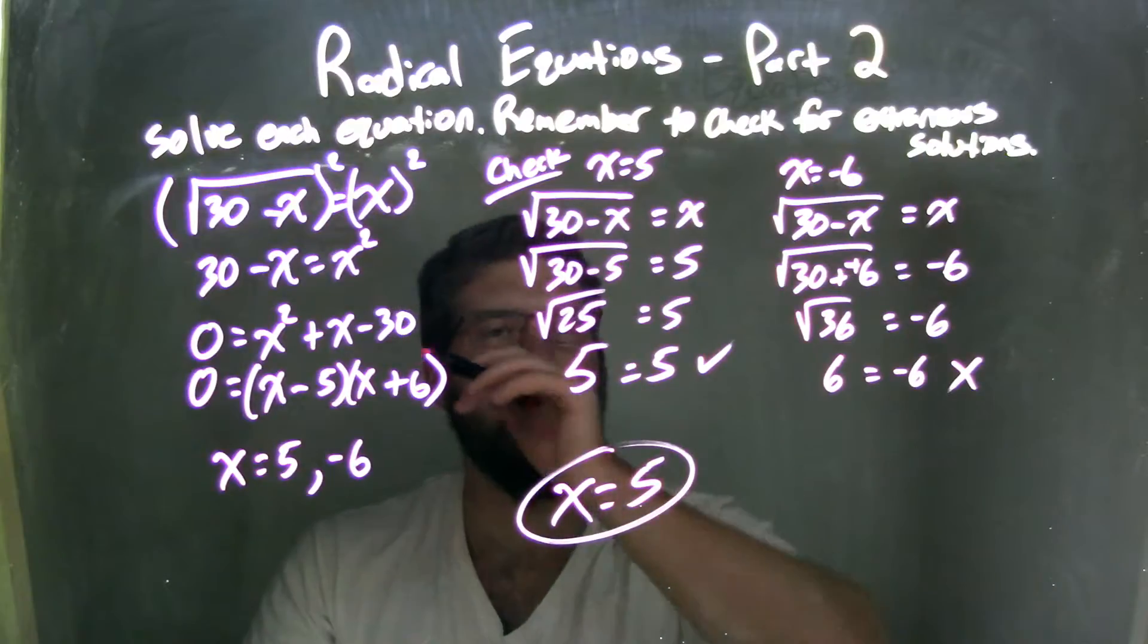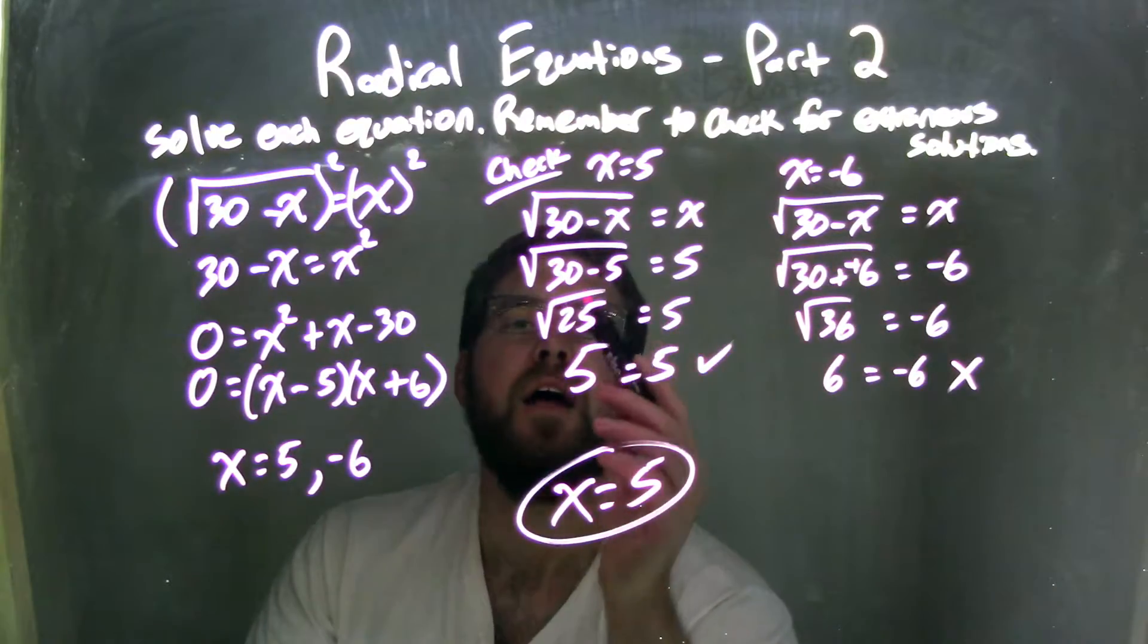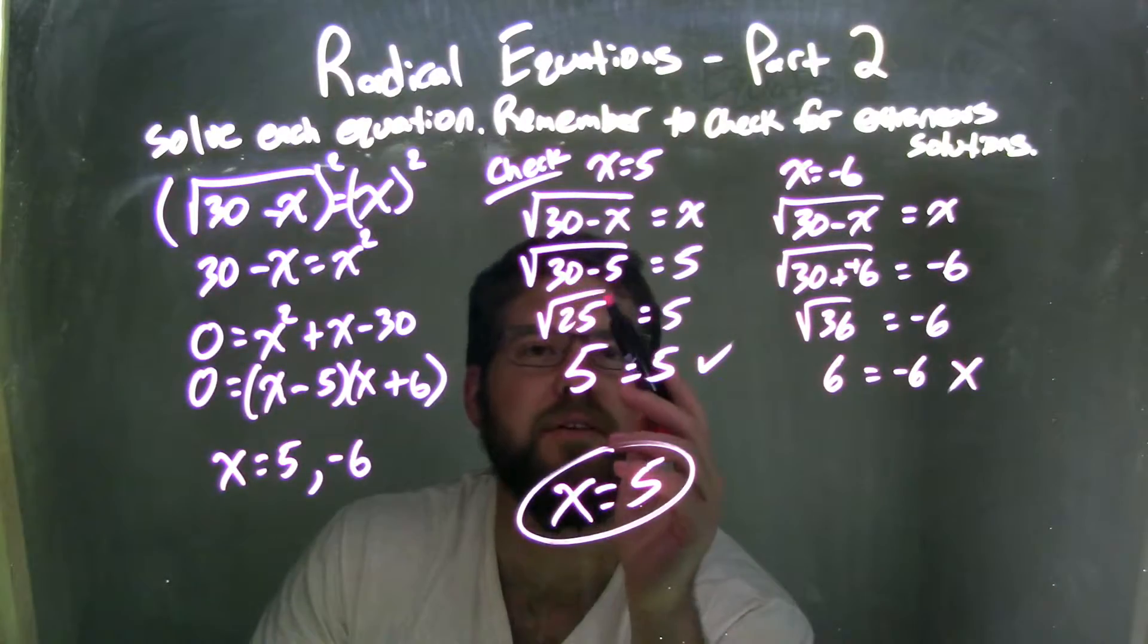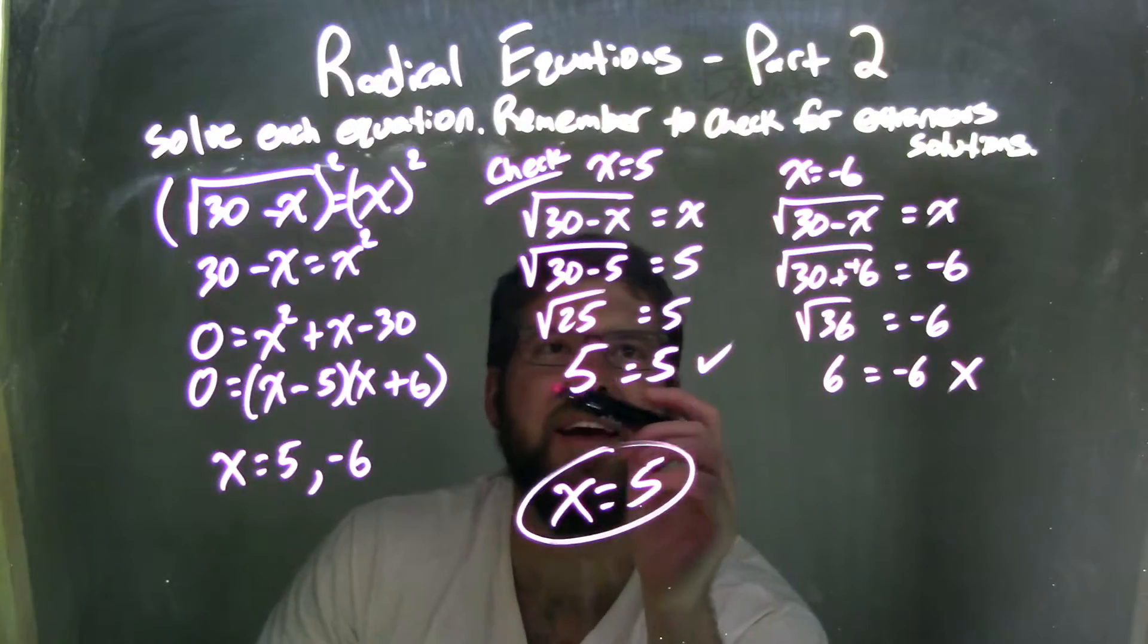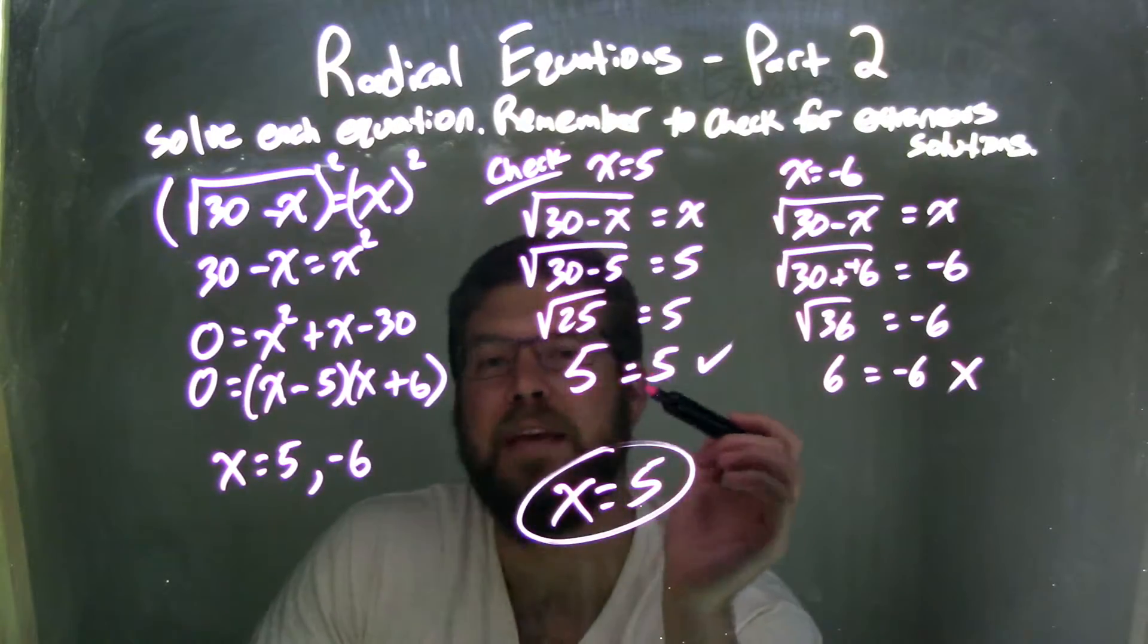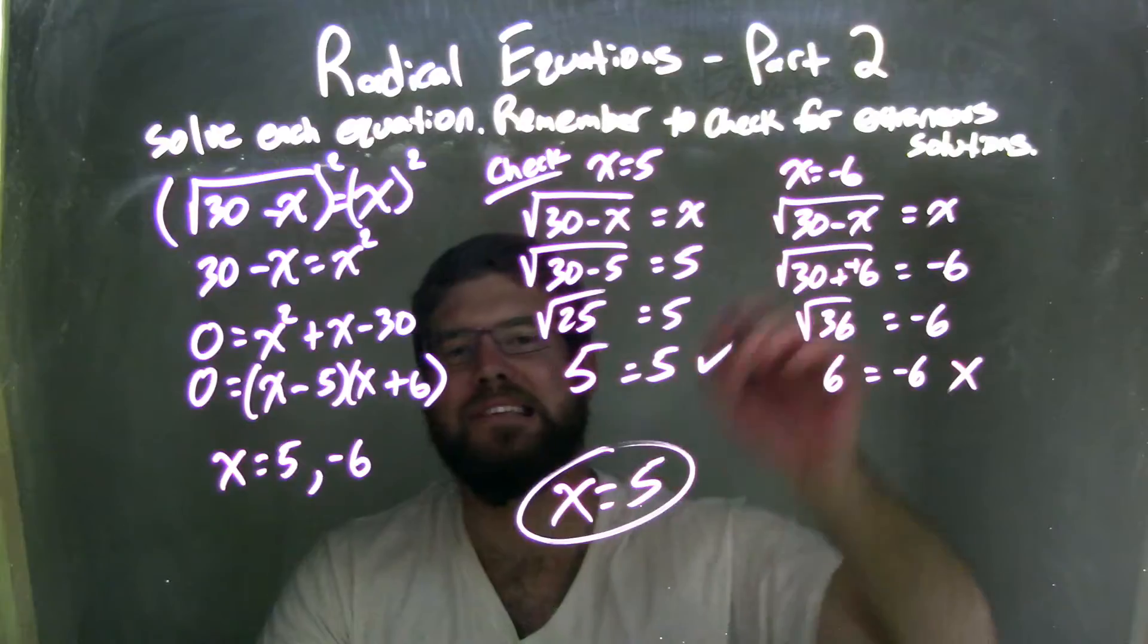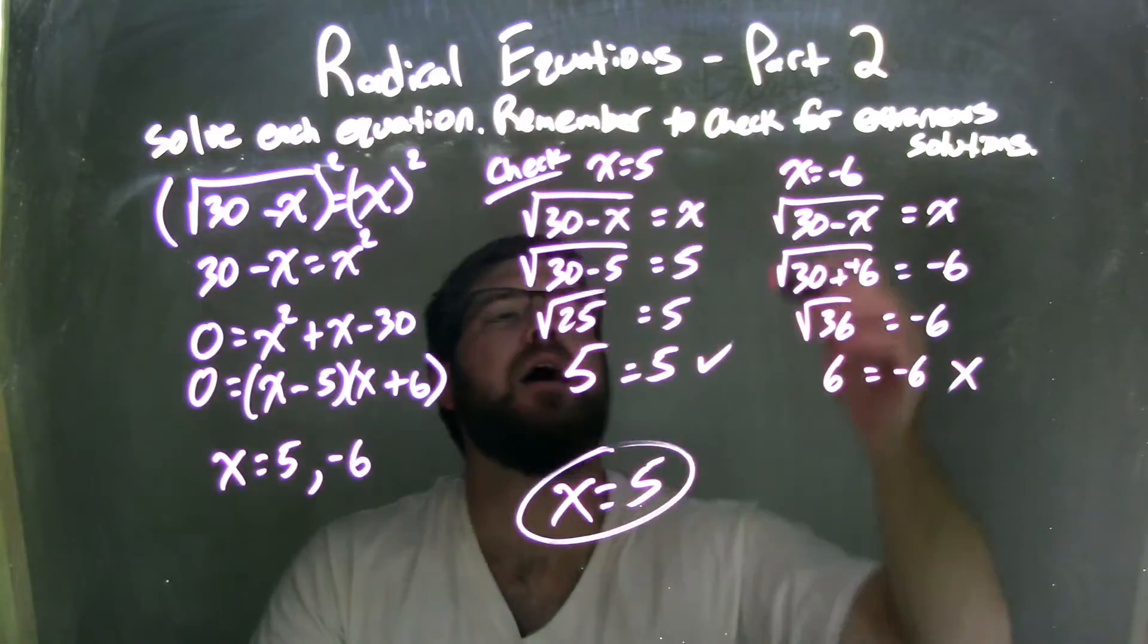So I need to check both of these. So I checked them here by plugging them both back into the original equation. This side here, I got 30 minus 5, that is 25, square root of 25 is 5, and left and right are equal, 5 equals 5. Fantastic. True solution.